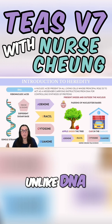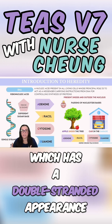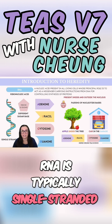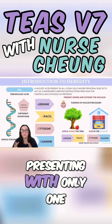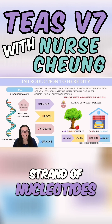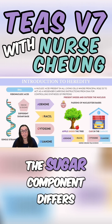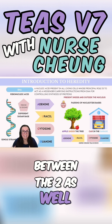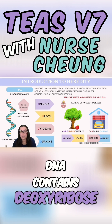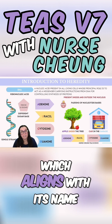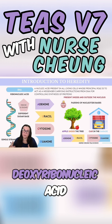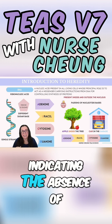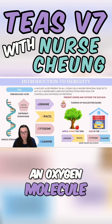Unlike DNA, which has a double-stranded appearance, RNA is typically single-stranded, presenting with only one strand of nucleotides. The sugar component differs between the two as well. DNA contains deoxyribose, which aligns with its name, deoxyribonucleic acid, indicating the absence of an oxygen molecule.